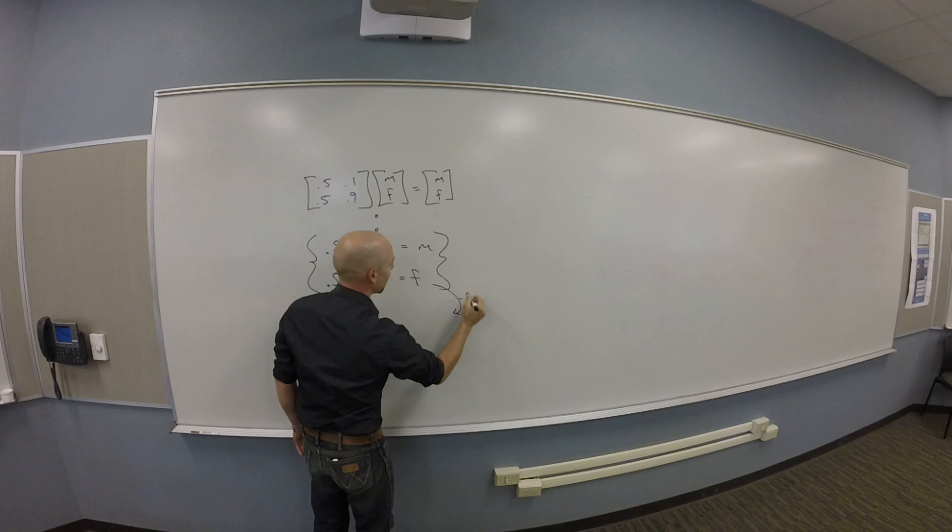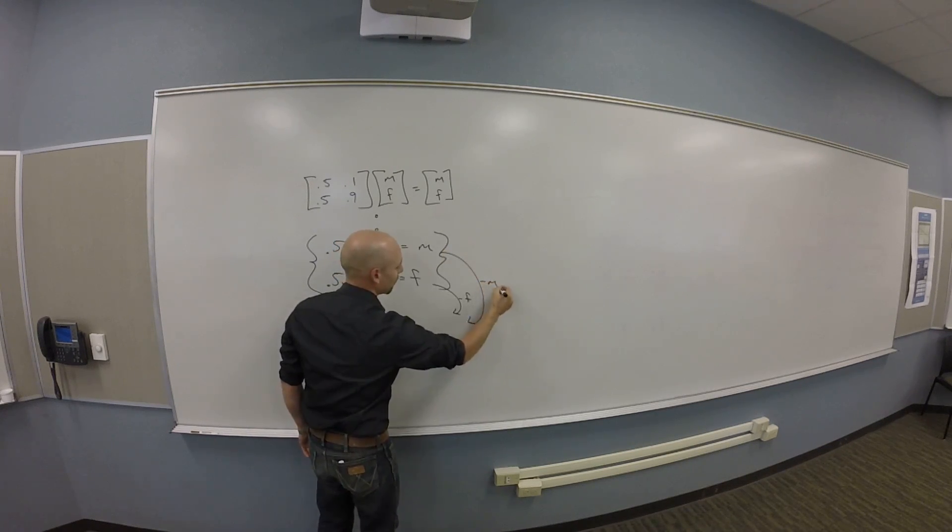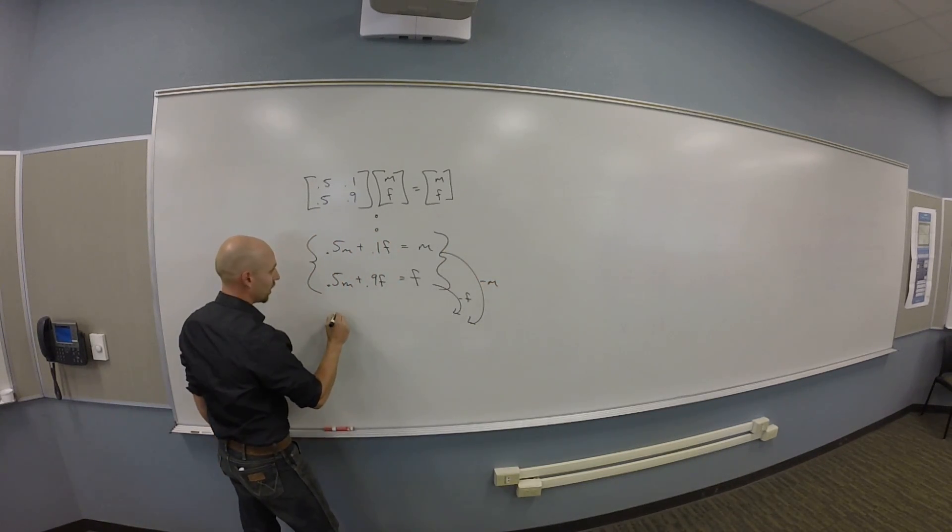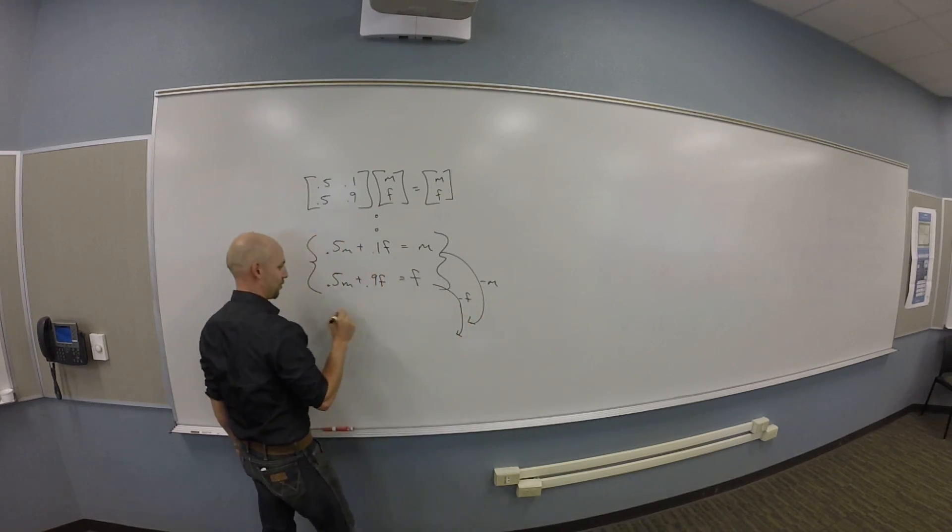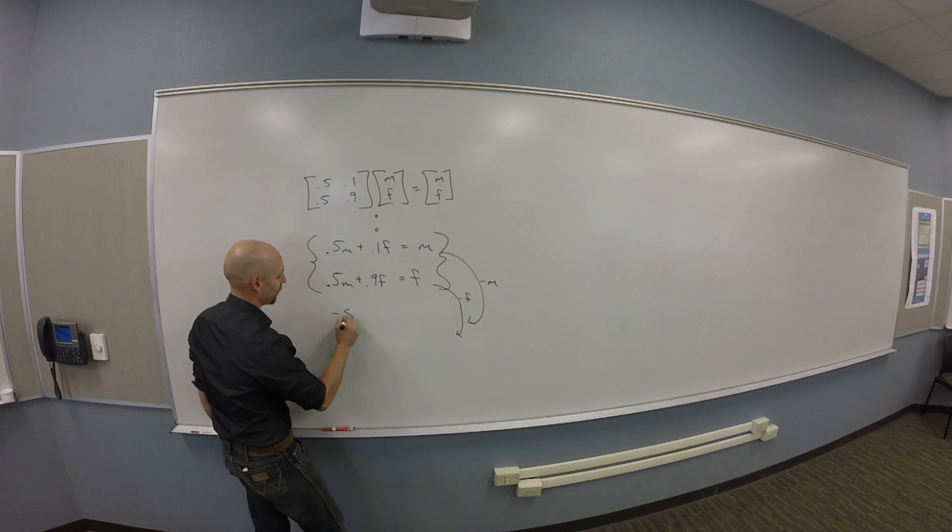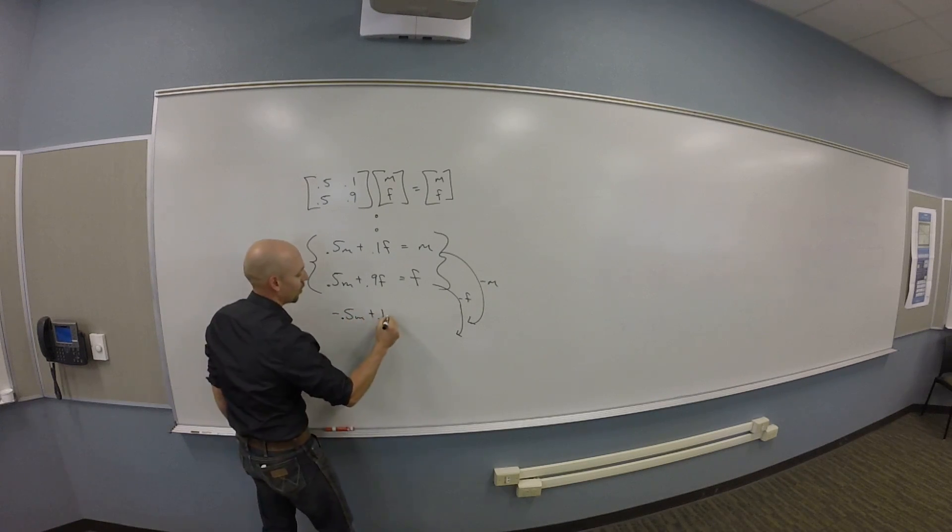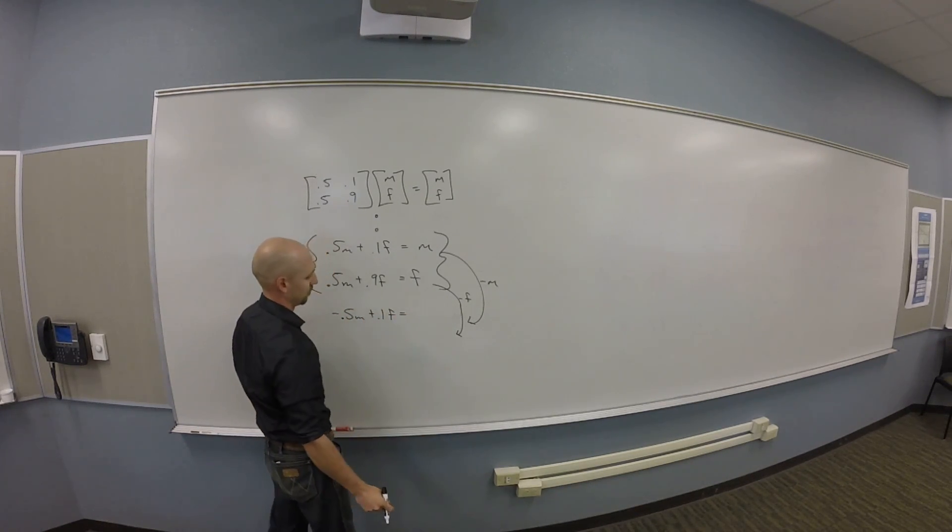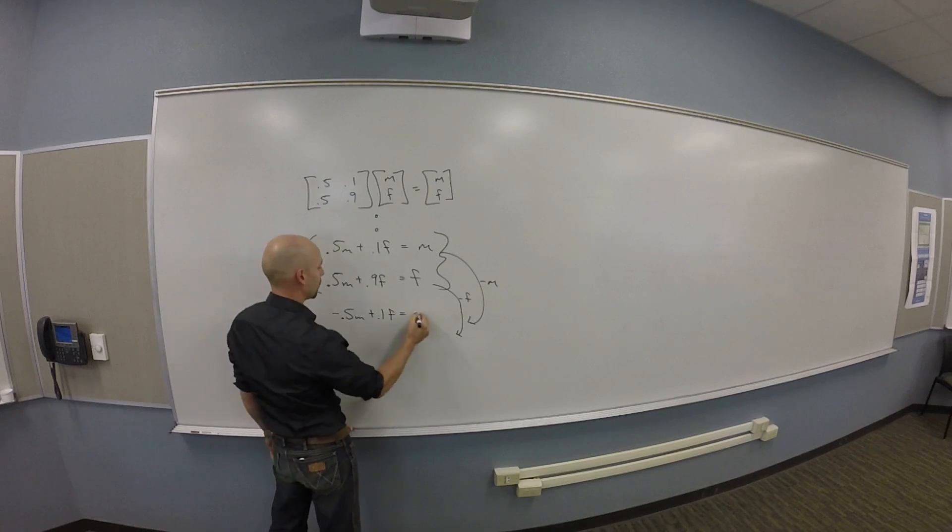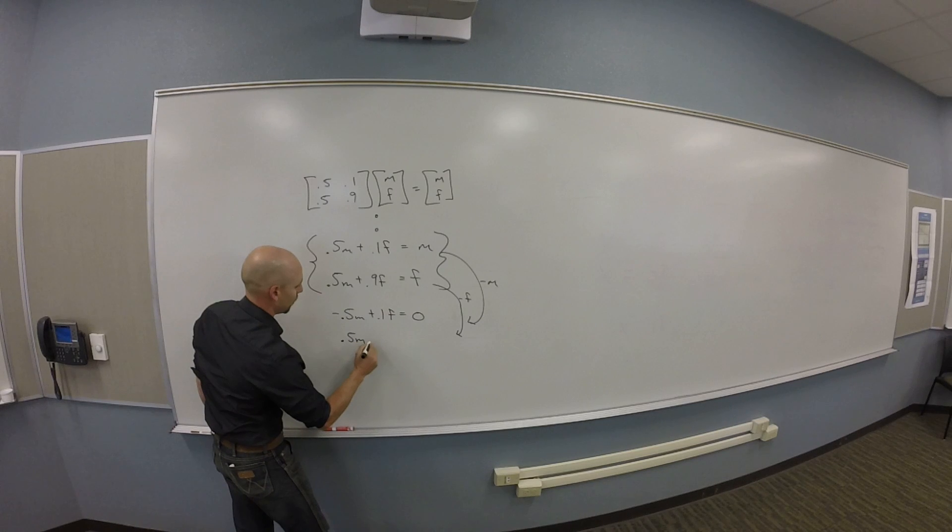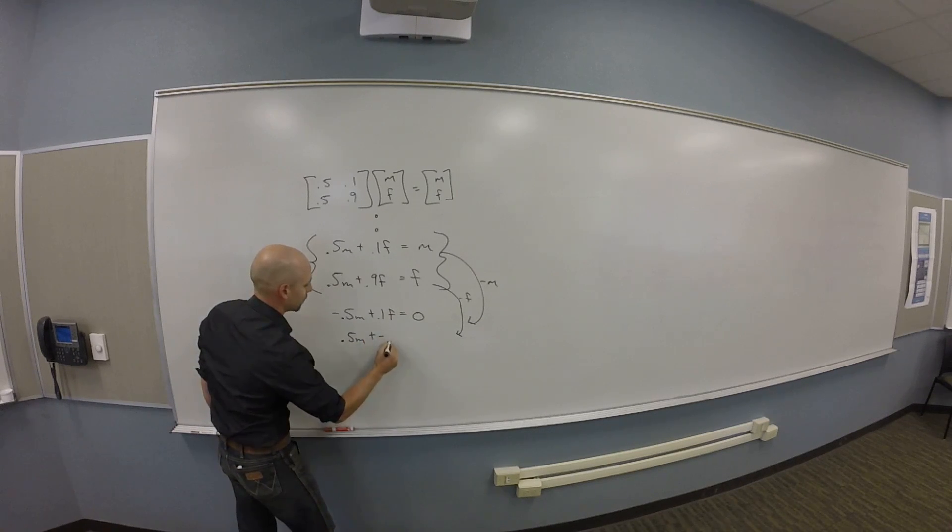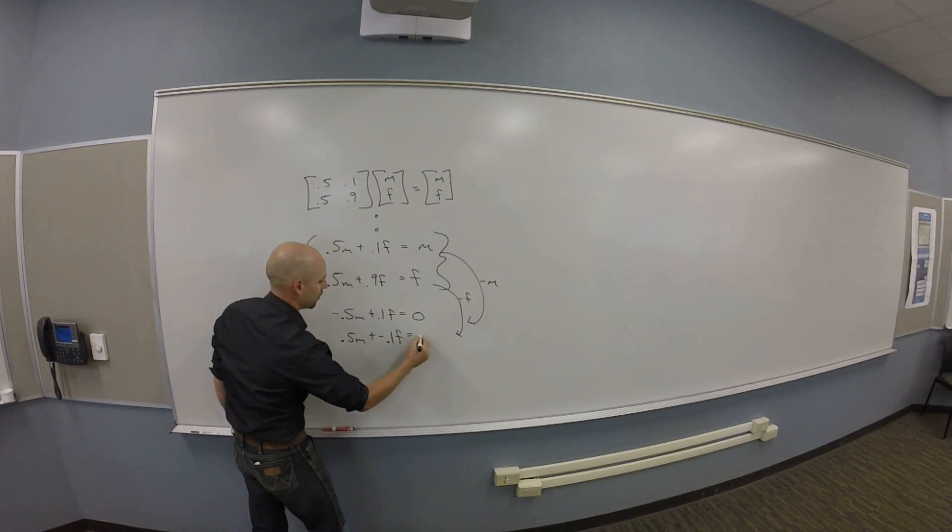So I'm doing subtract f to that one, subtract m to this one. And I'm going to get, oh God, I've flipped them over now. Cool. So I'm going to get minus 0.5m plus 0.1f equals 0 out of the first one. And out of the second one, I'm going to get 0.5m plus minus 0.1f equals 0.